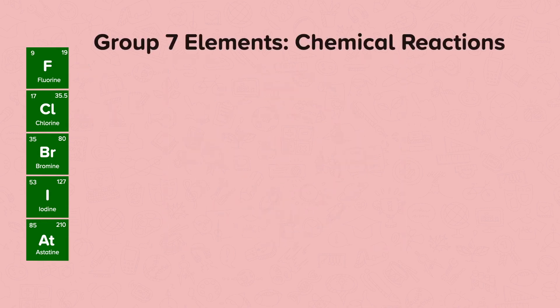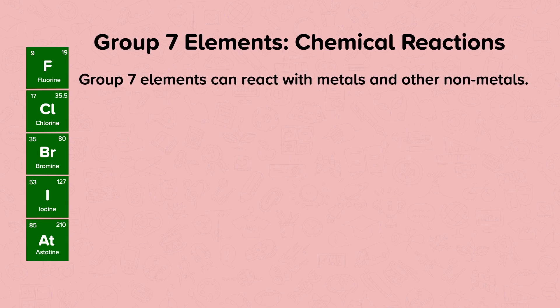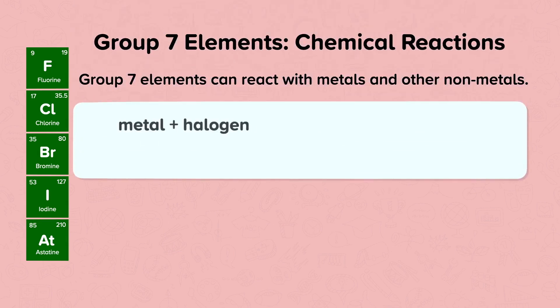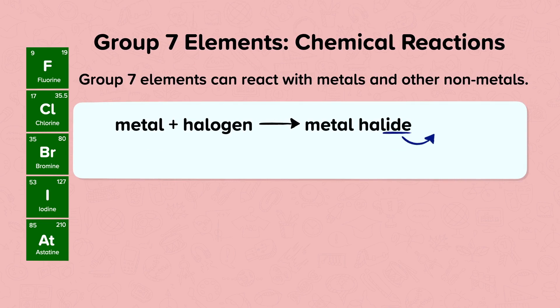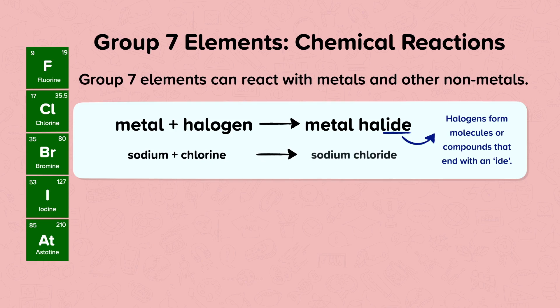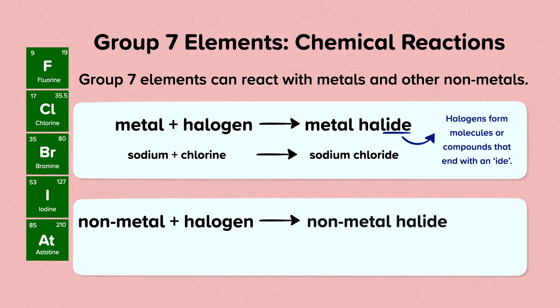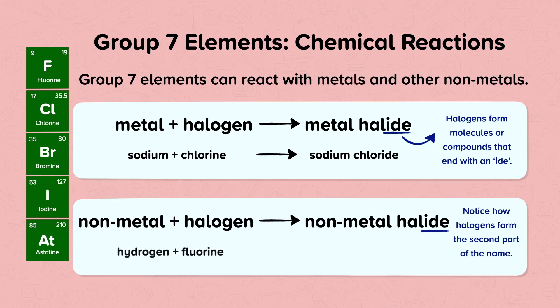Group 7 elements can react with metals and other non-metals. Metal plus a halogen makes a metal halide. Halogens form molecules or compounds that end with -ide. So for example, sodium plus chlorine produces sodium chloride. A non-metal plus a halogen produces a non-metal halide. Notice how halogens form the second part of the name, so hydrogen plus fluorine makes hydrogen fluoride.